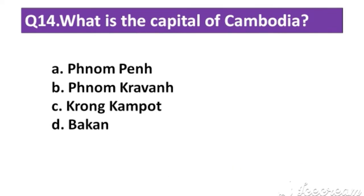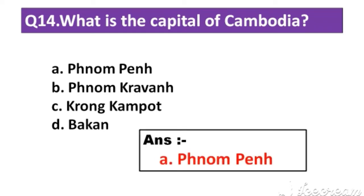Question number 14: What is the capital of Cambodia? Option A: Phnom Penh. Option B: Phnom Kravan. Option C: Krong Kampot. Option D: Pakan. The right answer is Option A: Phnom Penh.